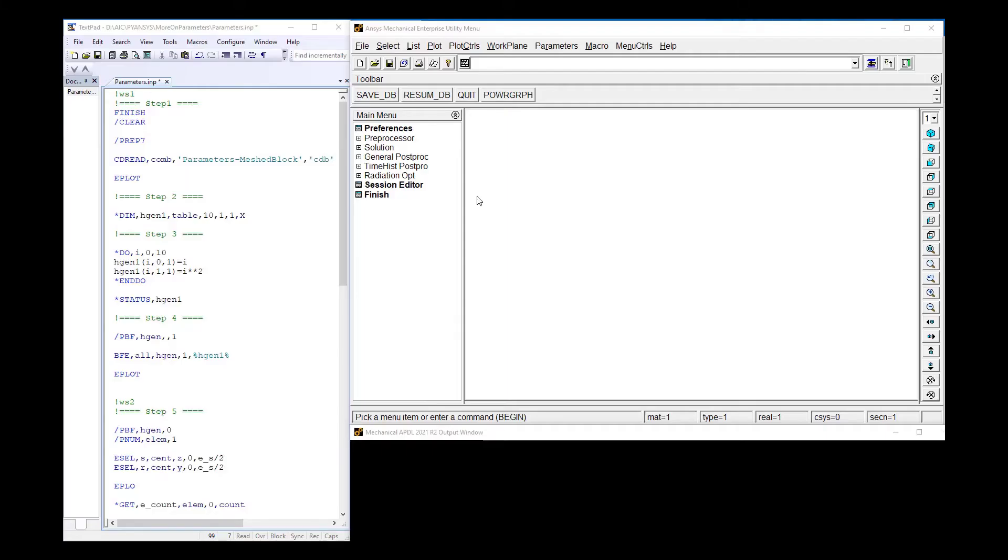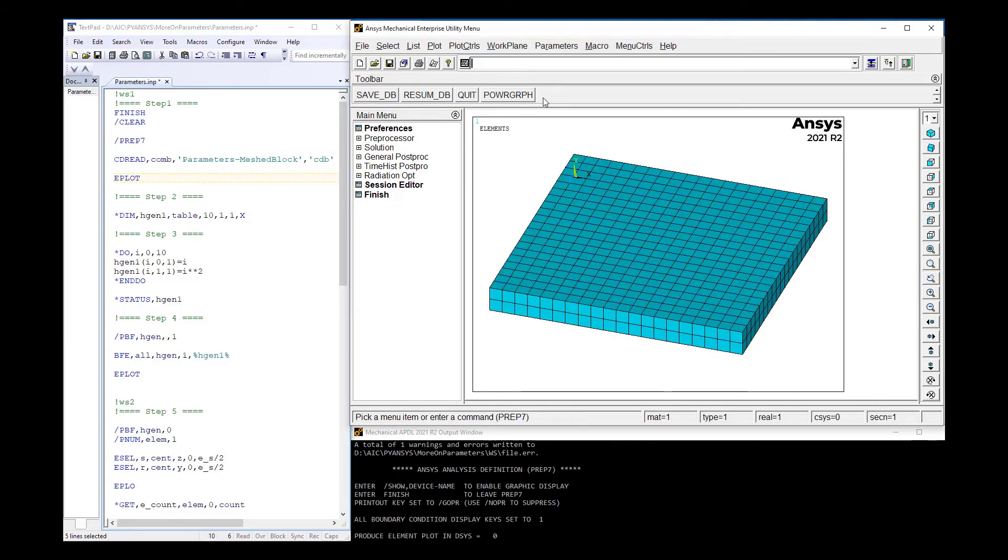A 10 by 10 by 1 unit block has been meshed and made available via a Mechanical APDL CDB file. So as before, step one is to enter the preprocessor and read in the CDB file. The plan is to define a heat generation to all the elements of the model and have the value be squared of the X location of the elements. Since the block is 10 units in X, let's define a 10 row and one column table named HGEN.